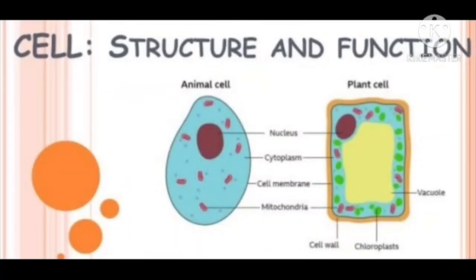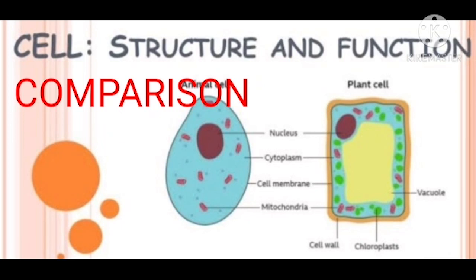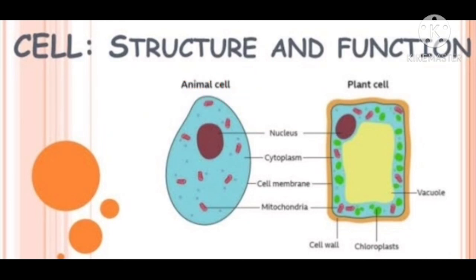Now let us compare plant and animal cells. Both have cell membrane, vacuole, nucleus and cytoplasm in common. However, in the animal cell there is no cell wall and no plastids. In the plant cell, cell wall and plastids are present, but in the animal cell, cell wall and plastids are absent. That is all about this chapter — I hope you have understood it very clearly.